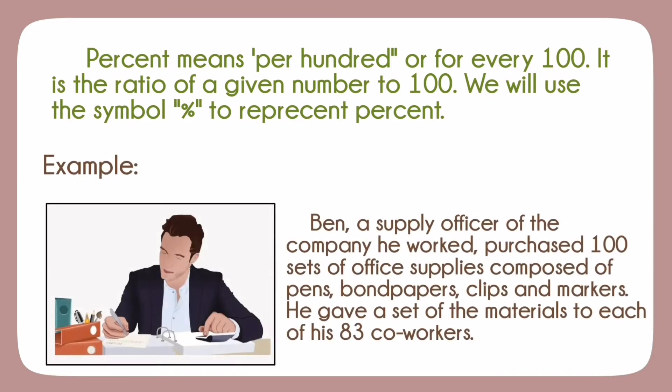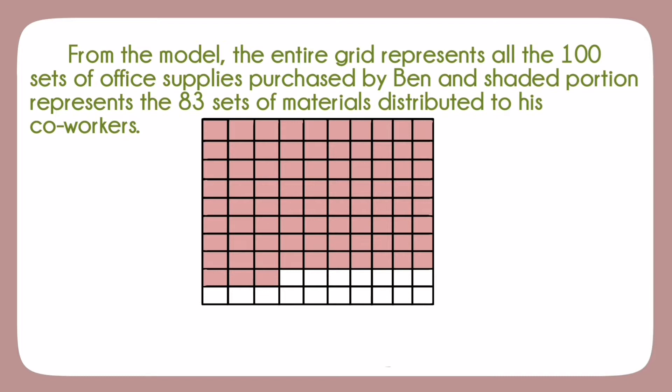Let's start with an example. Ben, a supply officer of a company, purchased 100 sets of office supplies composed of pens, bond papers, clips, and markers. He gave a set of the materials to each of his 83 co-workers. From the model, the entire grid represents all the 100 sets of office supplies purchased by Ben and the shaded portion represents the 83 sets of materials distributed to his co-workers.